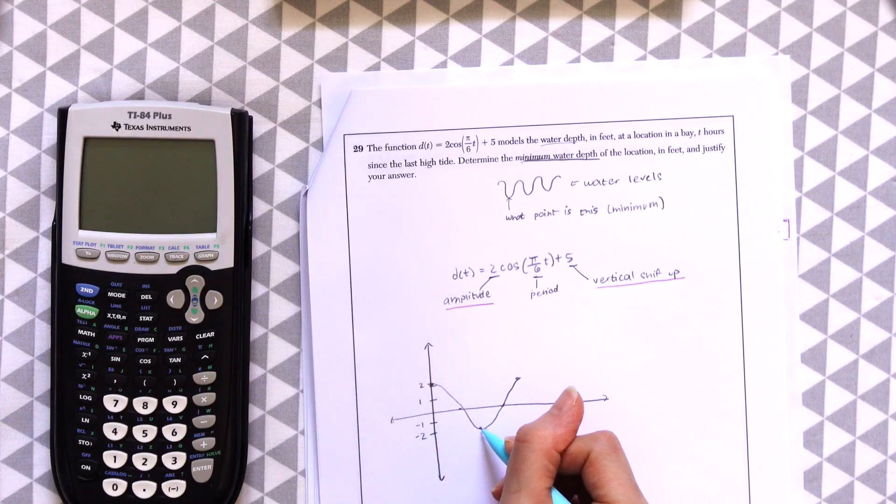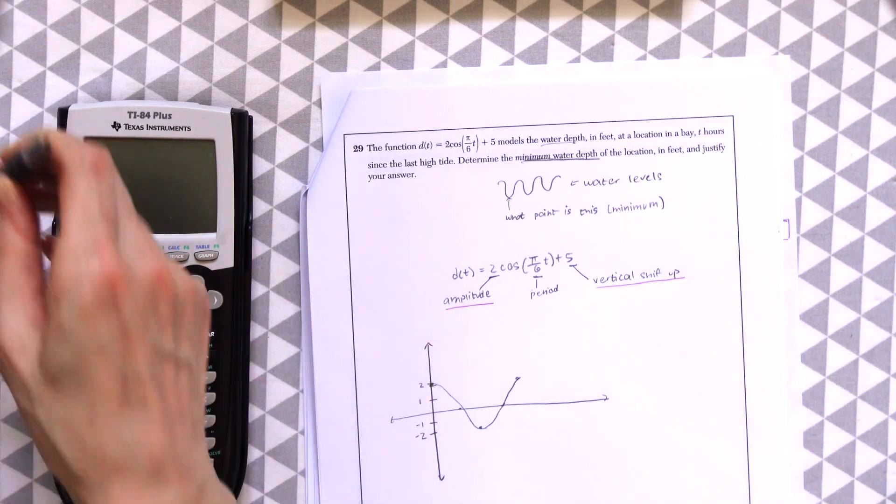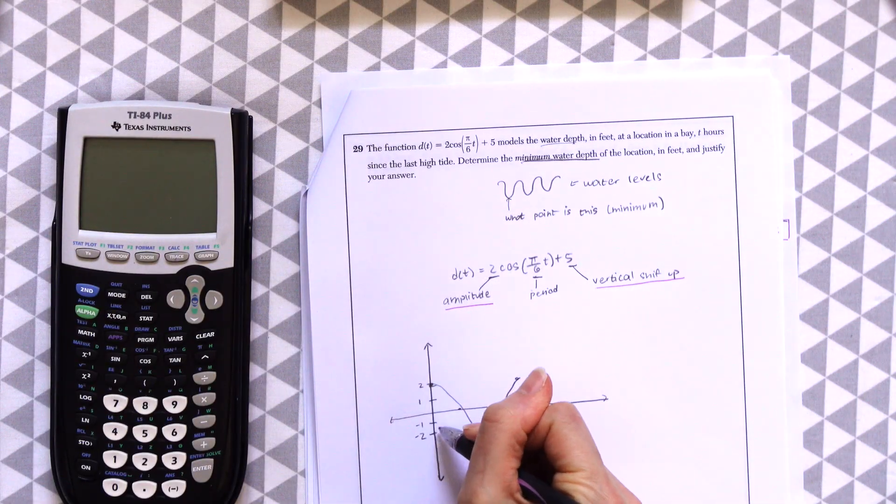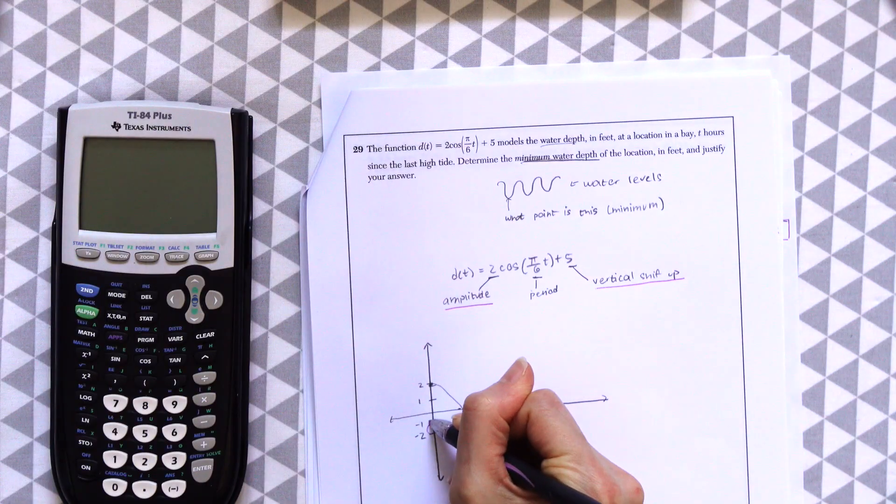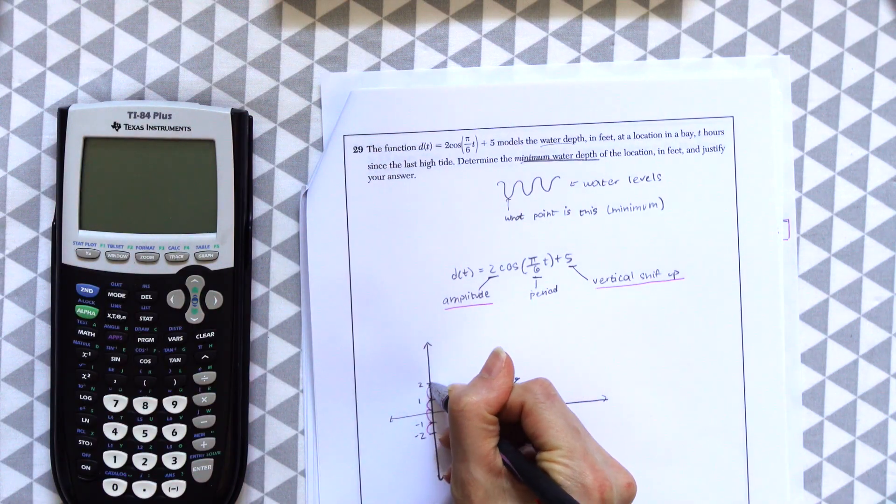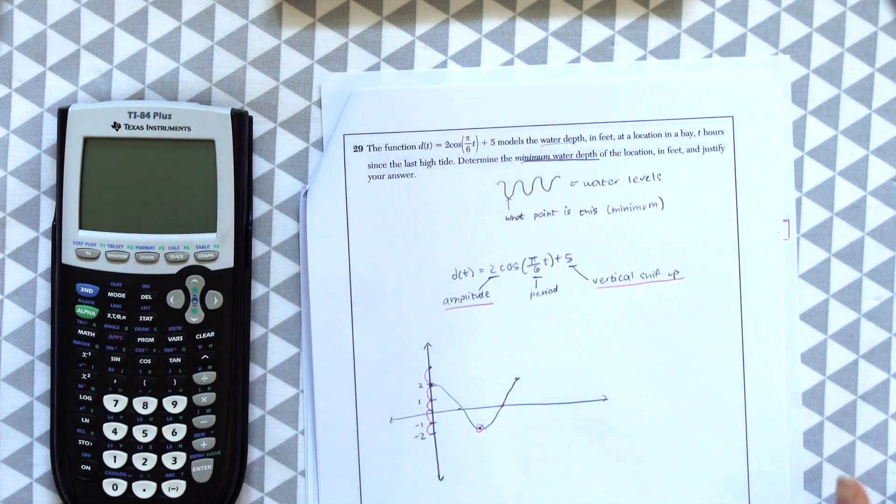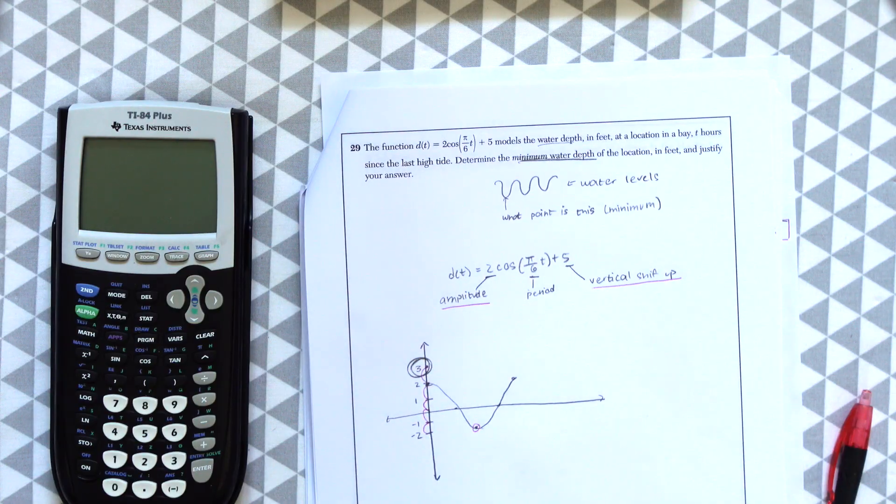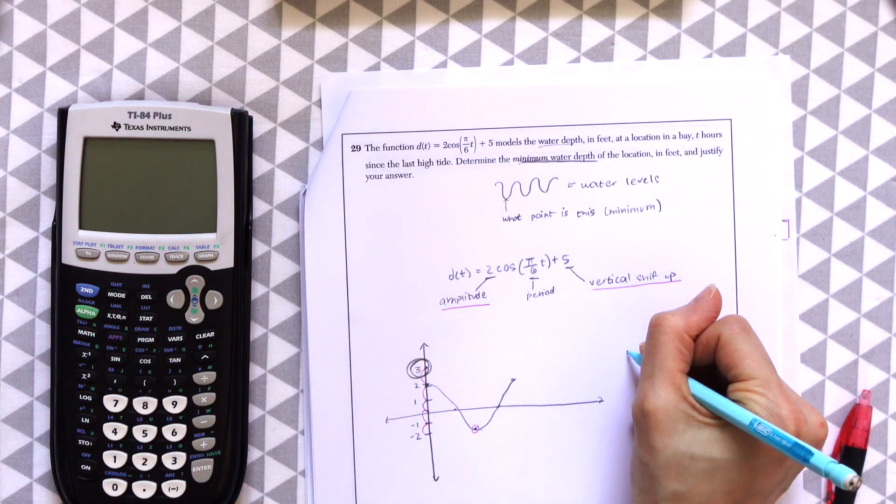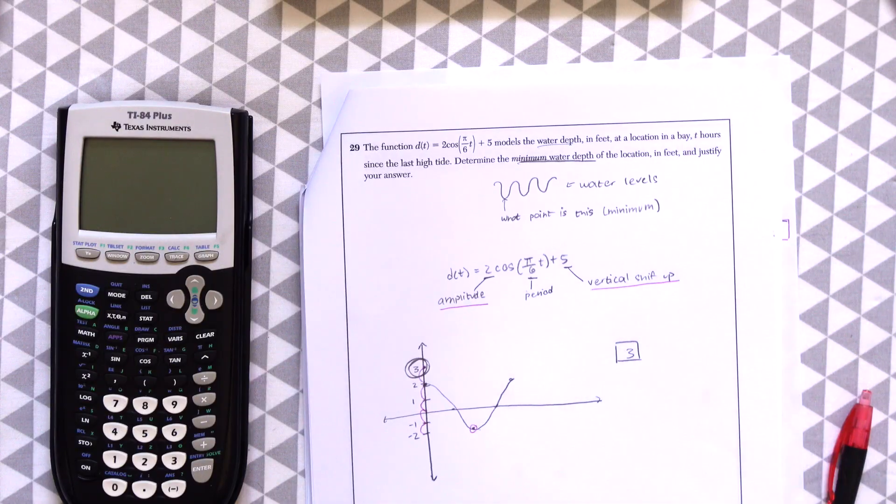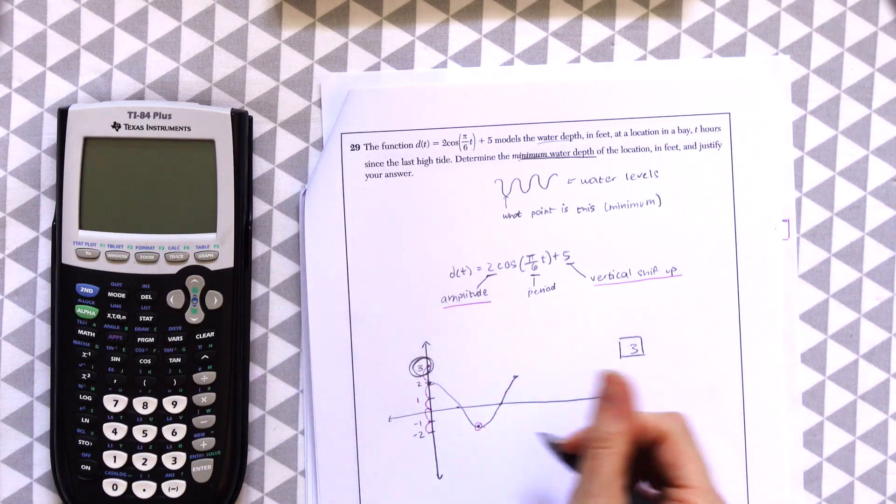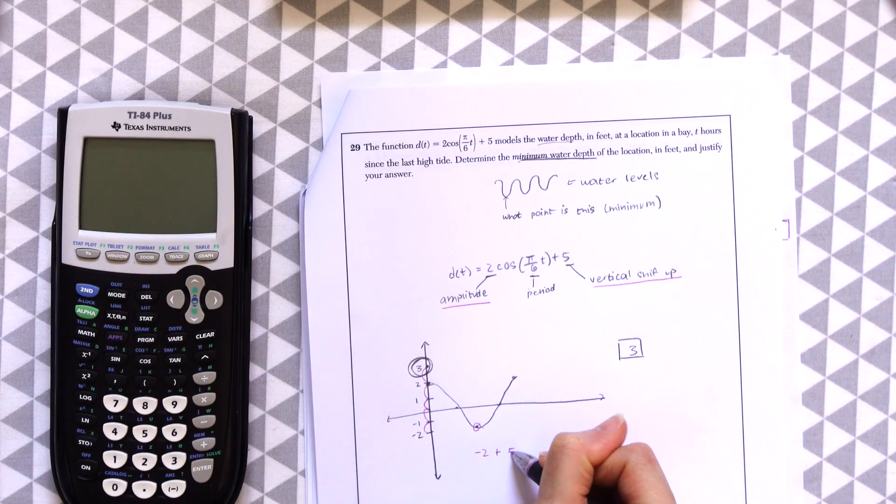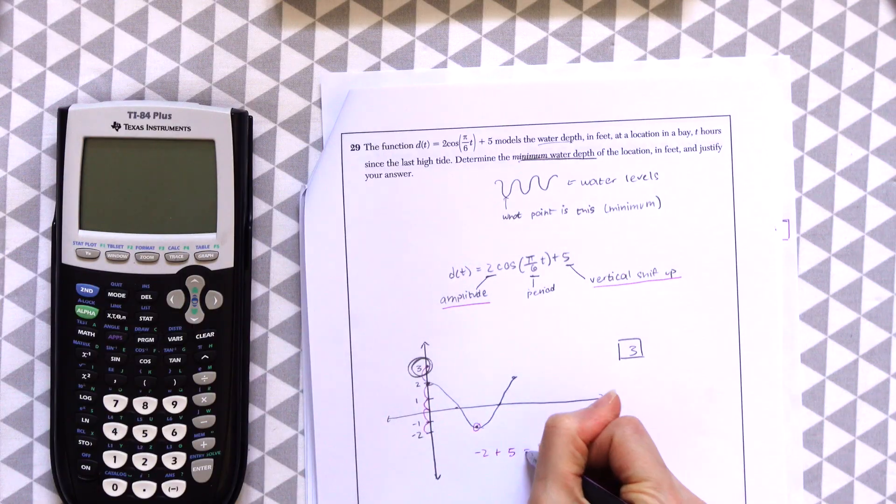Because of the vertical shift up, we're going to have to imagine this point up 5 units. So this point at negative 2, we have to imagine where it would go in 5 units. So we went 1, 2, 3, 4, 5. You see that it would end up at 3, which is our answer. We have this answer which is 3. That was based on moving this minimum number of negative 2 up 5 units because of the vertical shift and we get 3.